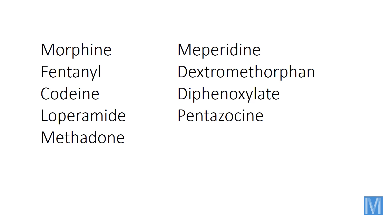Our next one is dextromethorphan — I'm going to imagine a meth orphan, an orphan who's maybe hopped up on some meth. We'll imagine he's right next to Perry dining, and maybe Perry is kind of handing him some of his food. This orphan is really enjoying the food coming to him from meperidine. Third one is diphenoxylate — that sounds a little bit like Fort Knox. So Fort Knox for diphenoxylate, and we can imagine a gold bar. Maybe the Perry guy is there eating a gold bar — he's actually got his fork and knife digging into this gold bar for dinner.